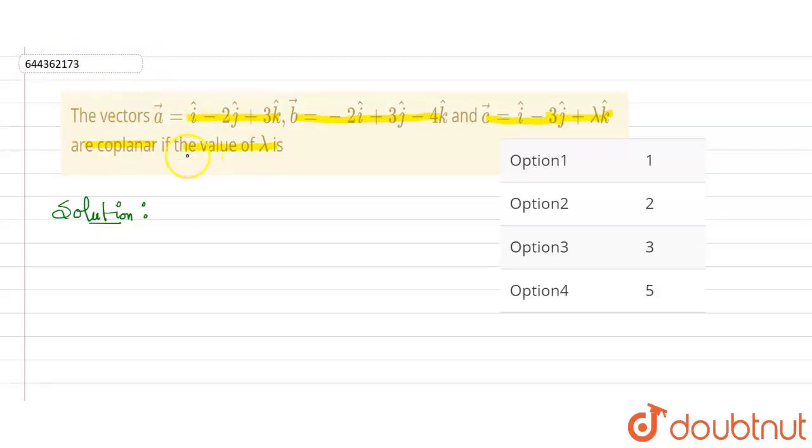First of all, we will write the three vectors. This is vector a: i cap minus 2j cap plus 3k cap. Similarly, vector b equals minus 2i cap plus 3j cap minus 4k cap.